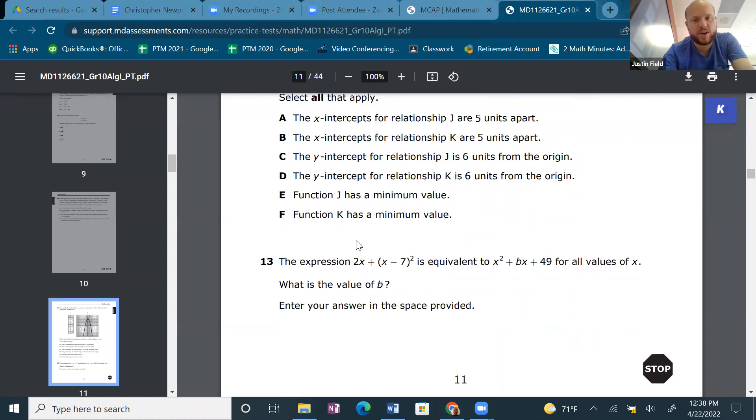The expression 2x + (x - 7)² is equivalent to x² + bx + 49 for all values of x. What is the value of b? Alrighty.